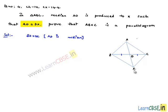that AD is extended to X such that AD is equal to DX. Now, if we consider the whole quadrilateral ABXC, AX and BC are diagonals.